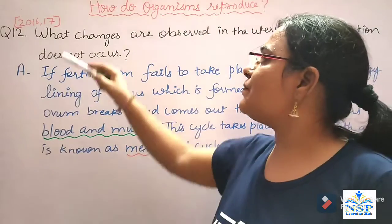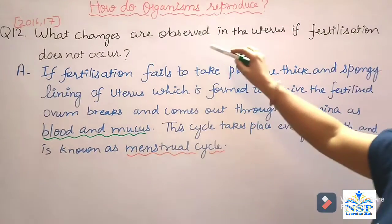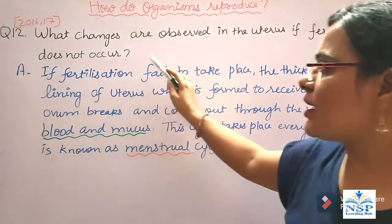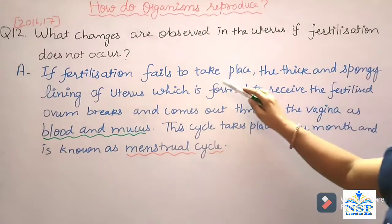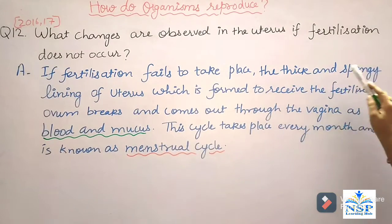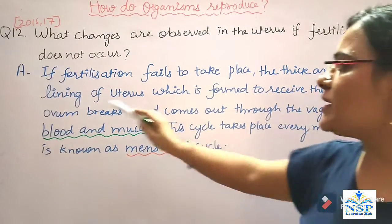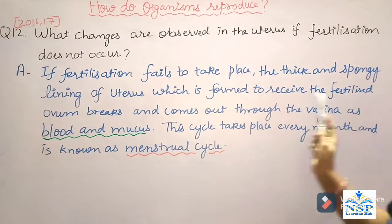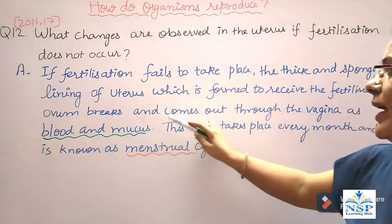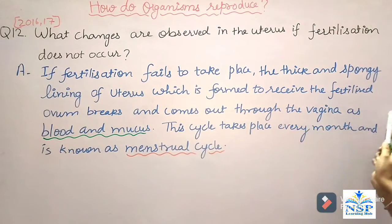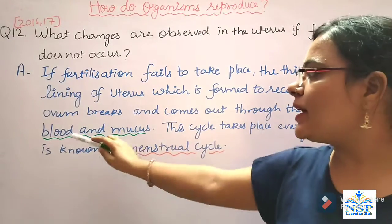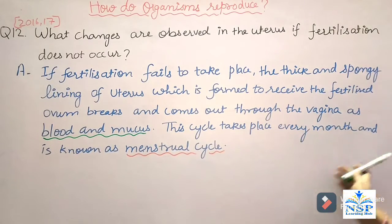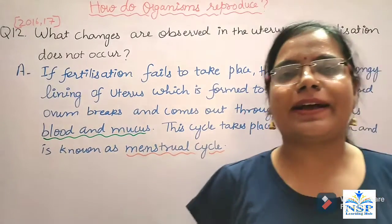Our next question is: what changes are observed in the uterus if fertilization does not occur? If fertilization fails to take place, the thick and spongy lining of the uterus, which was formed to receive a fertilized ovum, breaks down and comes out through the vagina as blood and mucus. This cycle takes place every month and is known as the menstrual cycle.